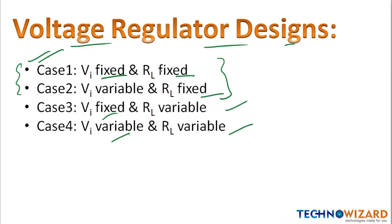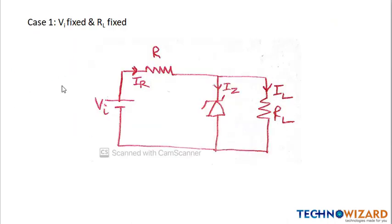First we will see Case 1, when Vi is fixed and RL is fixed. When Vi is fixed, the circuit will look like this. The current through the resistor will be equal to Iz — that is the zener current or knee current — plus the load current IL.